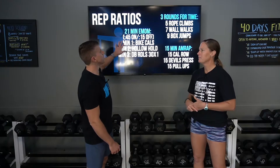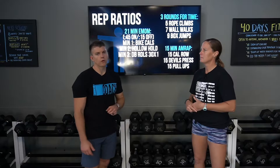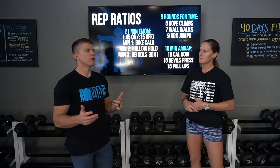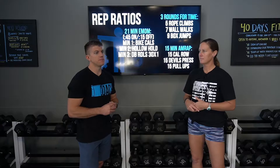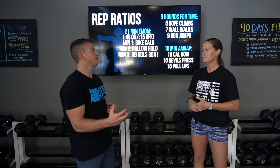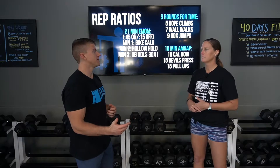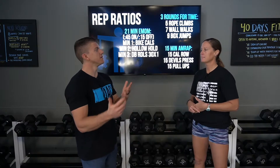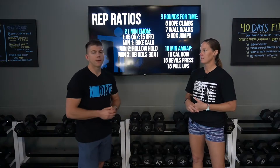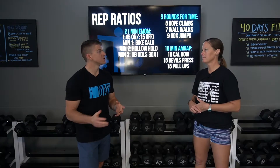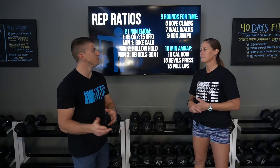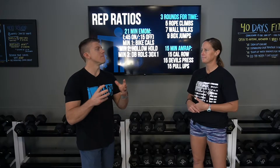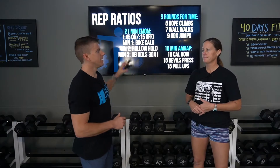Through movement selection, we could keep this format and still do a core movement in minute two — just make it more doable. Maybe it's a half hollow hold with one foot out at any given time, more like a modified tuck. Maybe it's dead bugs, which would be even a little easier. Or maybe it's a plank, which is probably the most ideal movement for that time domain and number of rounds, and would fit best in this format.